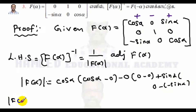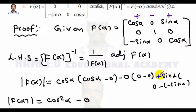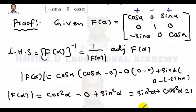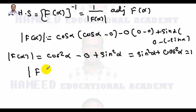Now the determinant of f(α) equals cos α times cos α, which is cos²α, plus those zero terms, plus sin α times sin α which is sin²α. So det f(α) equals cos²α plus sin²α, which equals 1. Therefore the determinant of f(α) is 1.